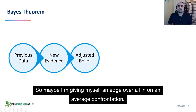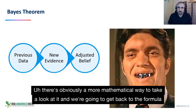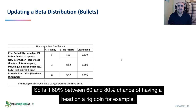So maybe I'm giving myself an edge overall in an average confrontation. There's obviously a more mathematical way to take a look at it and we're going to get back to the formula a little later on. So is it 60 percent — between 60 and 80 percent chance of having it head-on, like a coin flip for example?